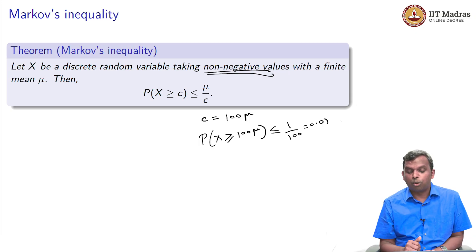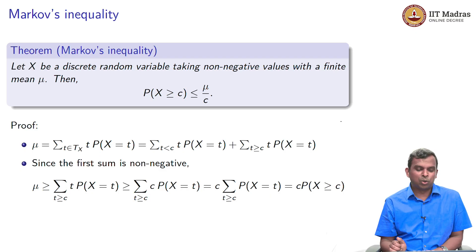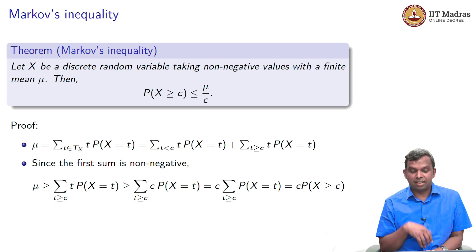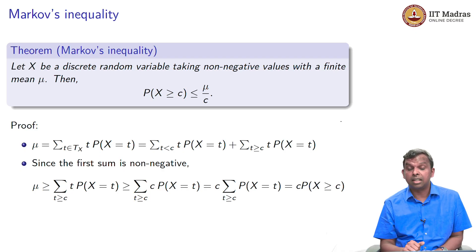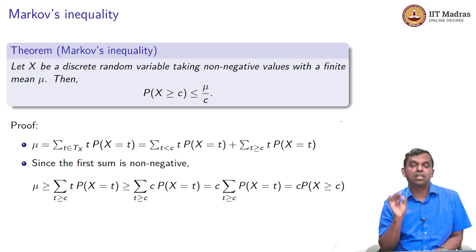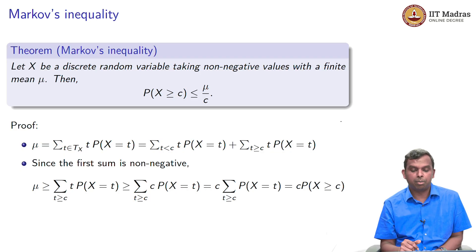The proof of Markov's inequality is quite simple — I am not going to go over it in detail. You define the event, observe that if X is greater than or equal to C you can replace T with C, and you get the result. It is an easy inequality to remember: probability that X is greater than or equal to C is less than or equal to mu by C. But remember, this holds only when X is non-negative. If the range of X has a negative value, then this does not hold — remember that, it is very important.